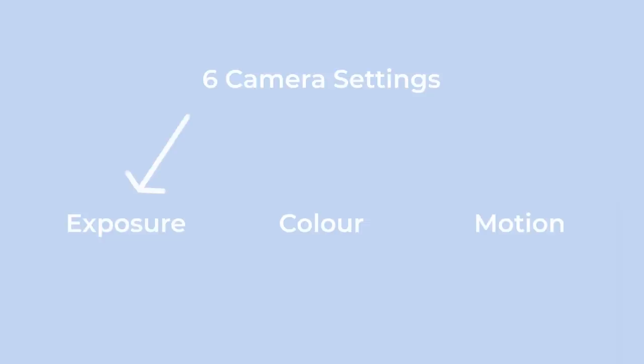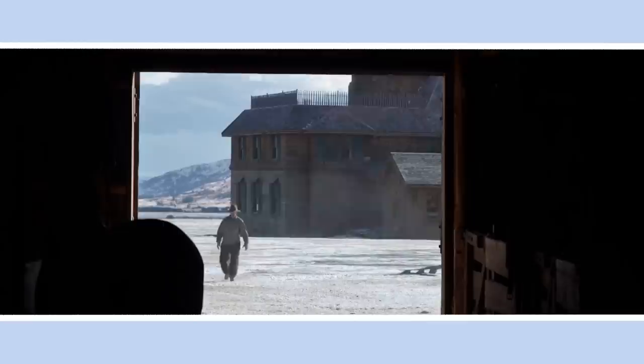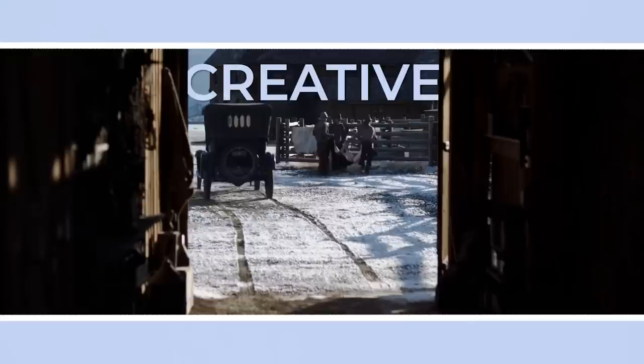Exposure settings, colour settings, and motion settings. These six variables have both technical value that can be used to control how an image looks, and also have creative value that changes the effect, mood, or feeling of an image.